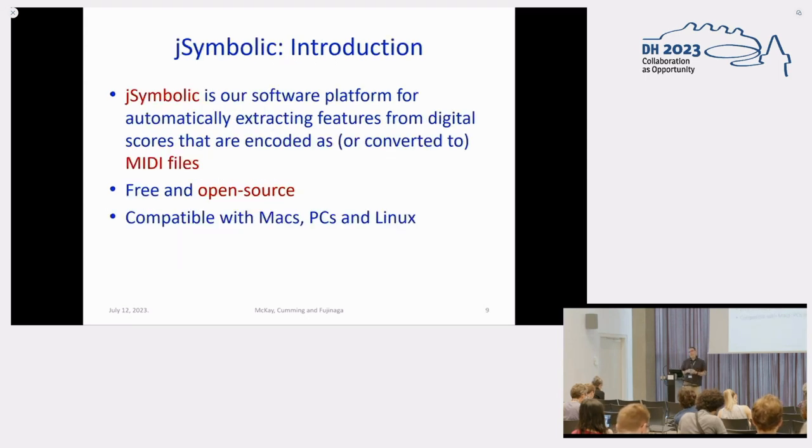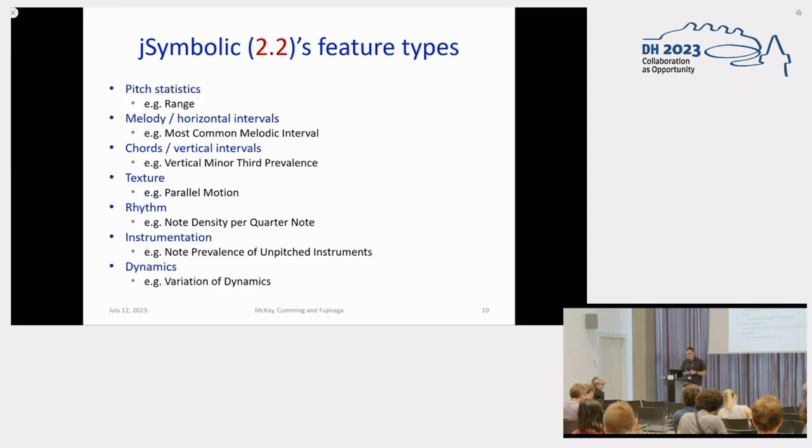So the next question then is how do you extract the features? In our case, we've created a piece of software called Jsymbolic, that's been around in various forms for a little over 20 years. It basically takes in a MIDI file and automatically extracts a bunch of features from them. The software is free and open source. It tries to cast a fairly broad net in terms of the types of features that it extracts. So you can look at different aspects of music. The features relate to pitch statistics as a whole, melody and horizontal intervals, chords and vertical intervals, texture, rhythm, instrumentation, and dynamics. So you really get a pretty broad look at kinds of characteristics of music that somebody might be interested in.